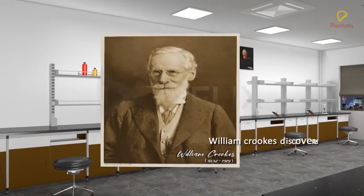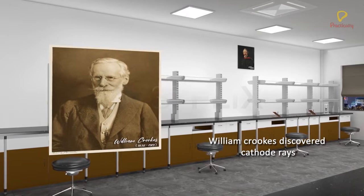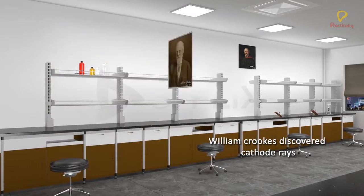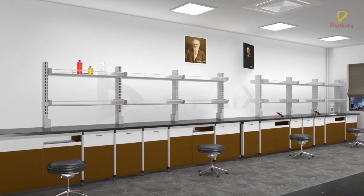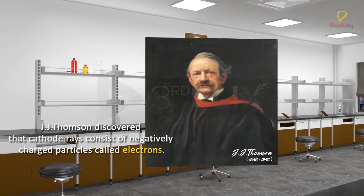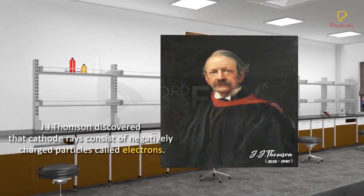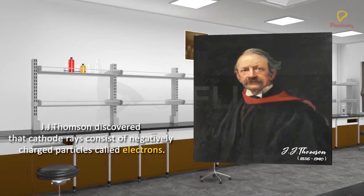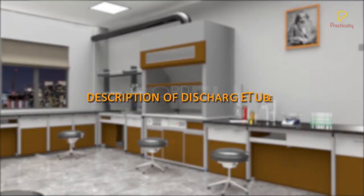William Crookes discovered cathode rays while studying the phenomenon of electrical discharge of gases, and JJ Thompson discovered that cathode rays consist of negatively charged particles called electrons. Let us now take a closer look at the sequence of events that led to the discovery of electrons.